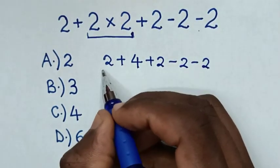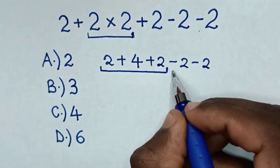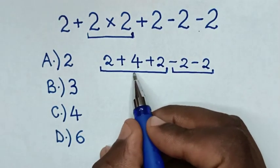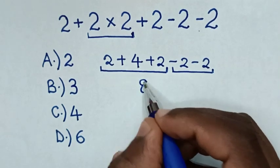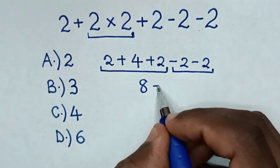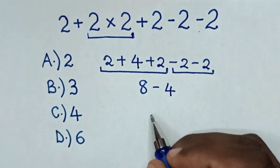Then we'll deal with the additions, and then we'll deal with the subtractions. So it will be 2 plus 4 is 6, 6 plus 2 is 8. Then negative 2 with negative 2 is negative 4, so 8 minus 4 is 4.